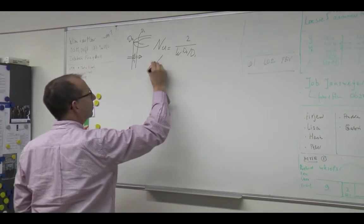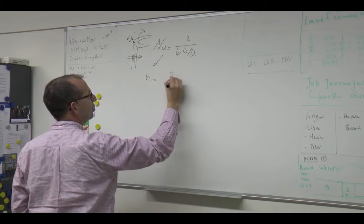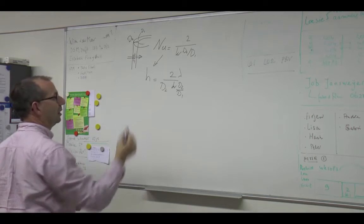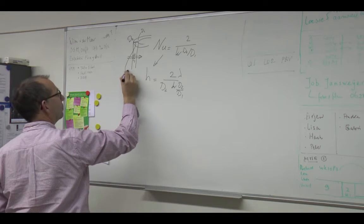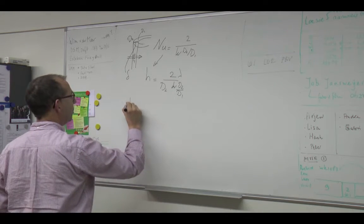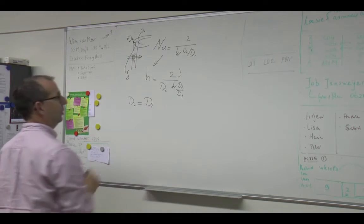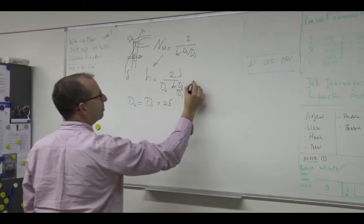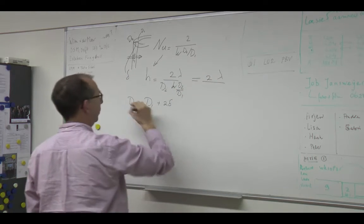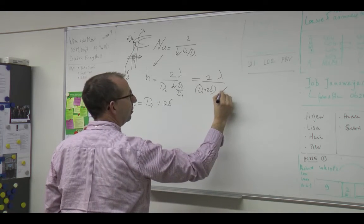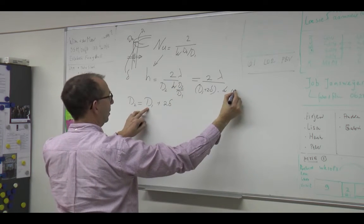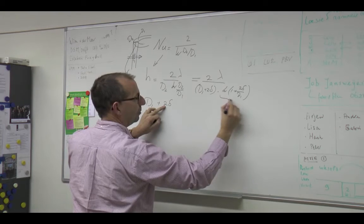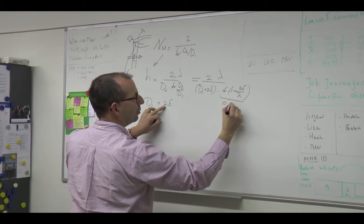From this Nusselt relation I can derive h, which is 2 over the outer diameter times lambda divided by the logarithm. Now I'm going to write that this is thin-walled — say it has thickness delta. Then the outer diameter is close to the inner diameter d1, varying by twice the thickness: 2 delta. And thus I can write that this is 2 lambda over (d1 + 2 delta) multiplied by the logarithm. d2 over d1 is (1 + 2 delta over d1). If delta gets small, the logarithm is approximately 2 delta over d1.